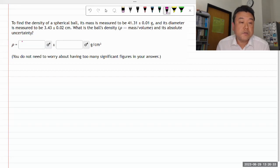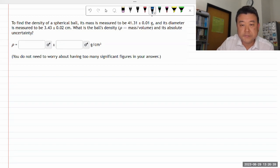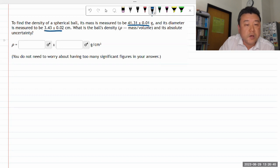This question asks to find the density of a spherical ball. Its mass is measured to be 41.31 ± 0.01 g, and its diameter is measured to be 3.43 ± 0.02 cm. The question is asking for the ball's density and its absolute uncertainty.